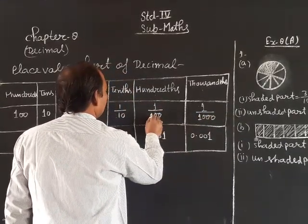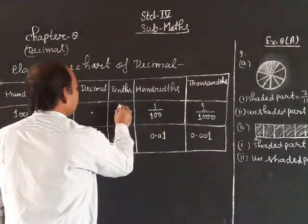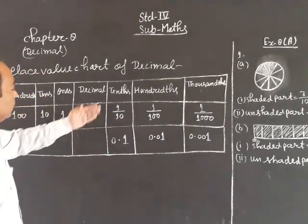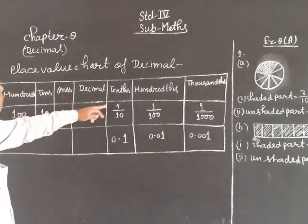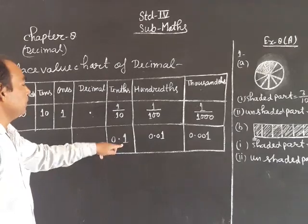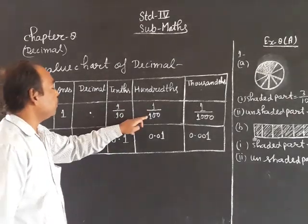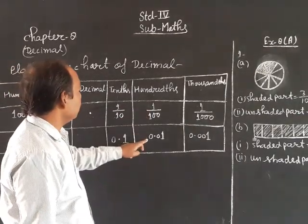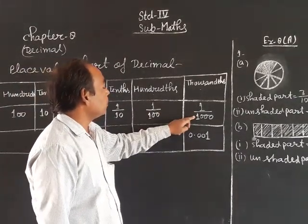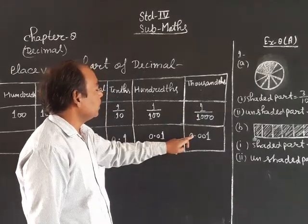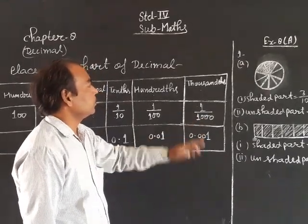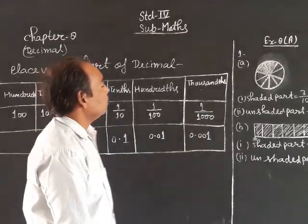Next, you can write: one upon ten means zero point one. One upon hundred means zero point zero one. One upon thousand means zero point zero zero one.